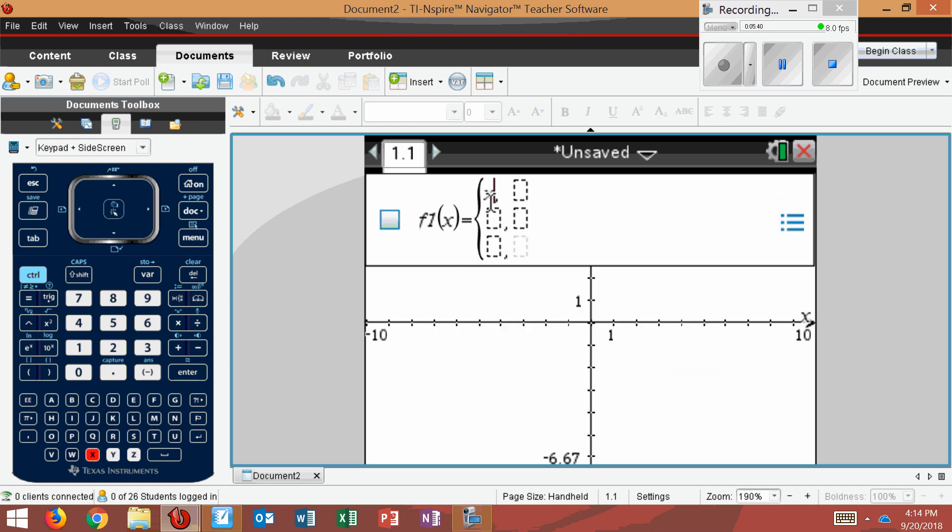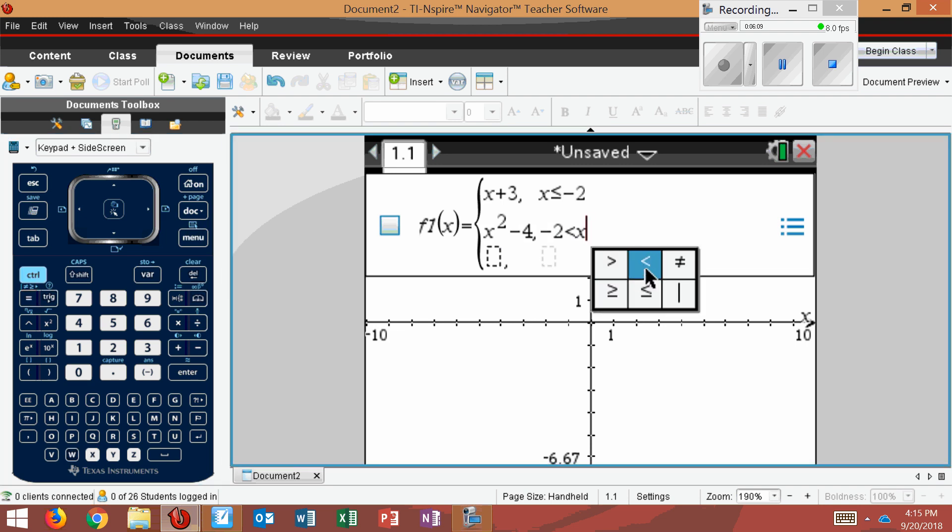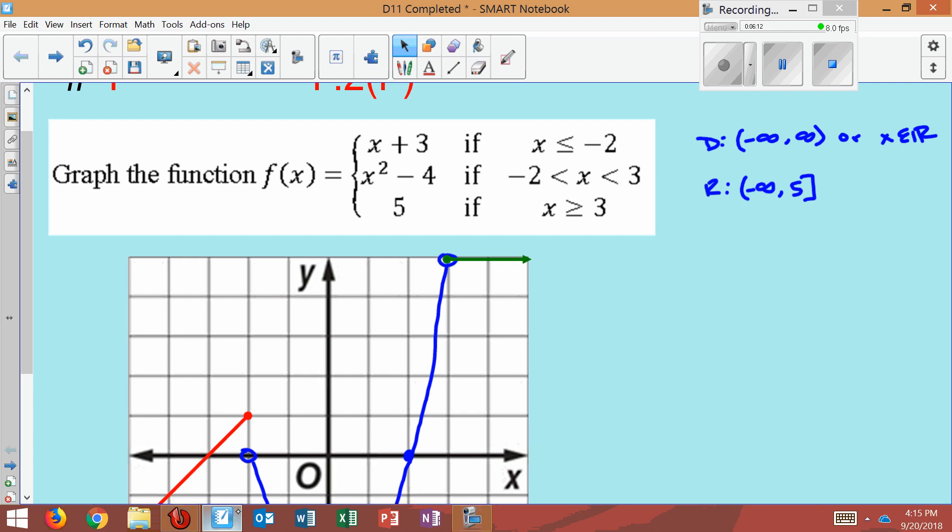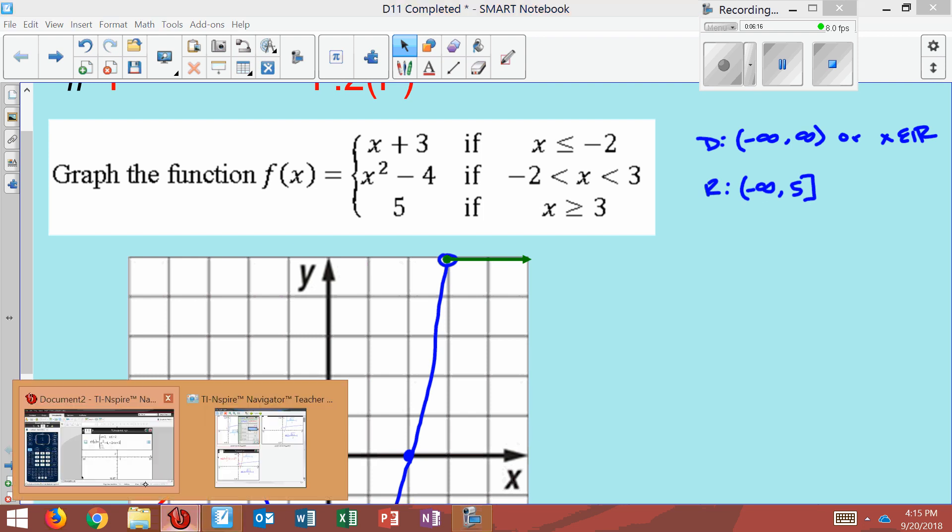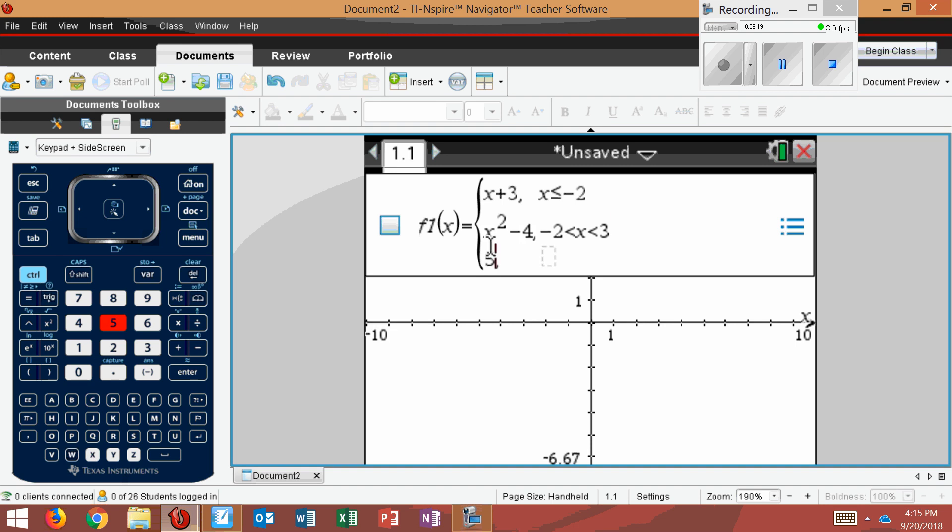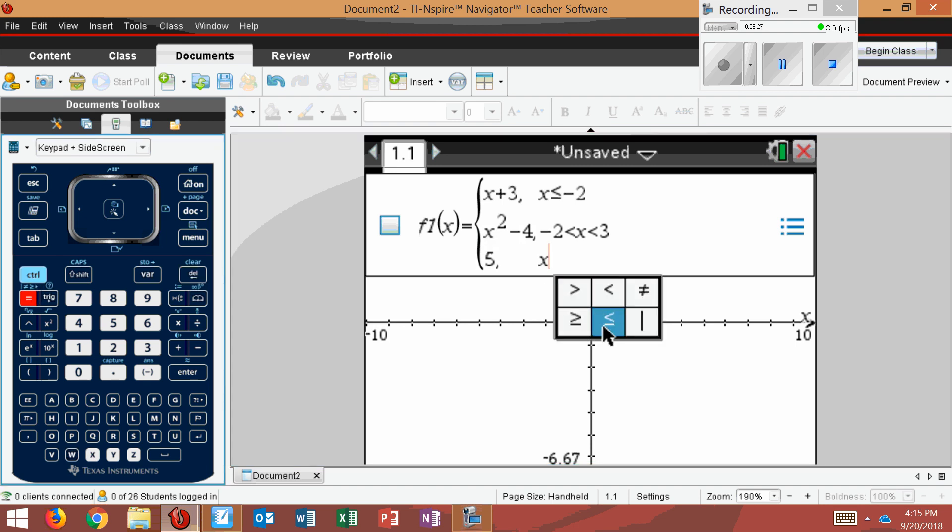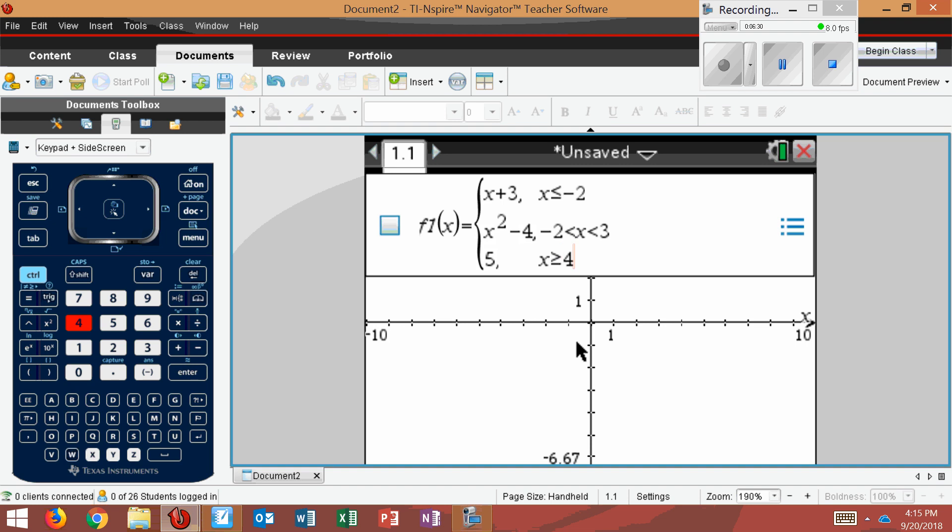And it will ask me how many you have. You say 3. The equation was x plus 3, as long as x is less than or equal to negative 2. The next equation was x squared minus 4, and this is as long as x was in between negative 2 and 3. And I'll check this in a second. I believe these were my values. And then I had 5 if x is greater than or equal to 3. Control equals gives me greater than or equal to 3. There we go.